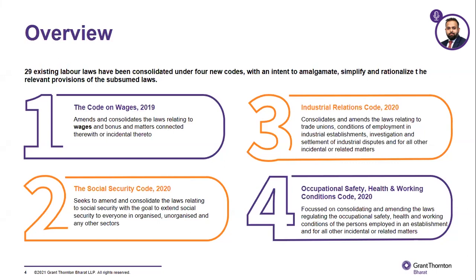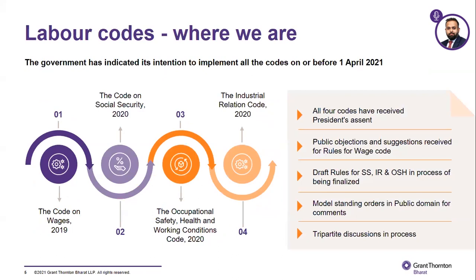It's important to know that while all four codes have received the President's approval as of September 2020, the codes will come into force on a date to be notified by the central government. There is no official date as of now. The government has indicated its intent to implement the codes from 1st April 2021 — that is the likely date of implementation but there is no official notification. On 28th January — two days ago — the government completed tripartite consultations for the four new labor codes, moving a step closer to finalizing the rules and their subsequent implementation.